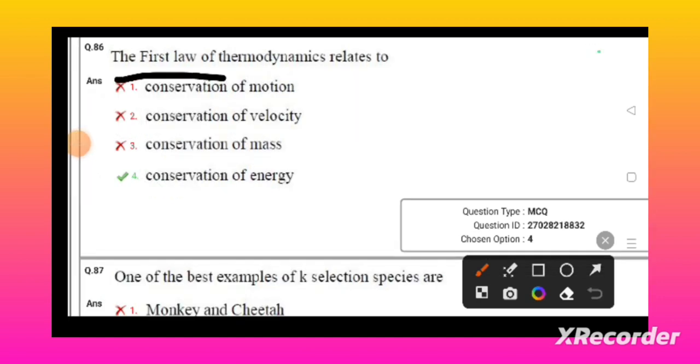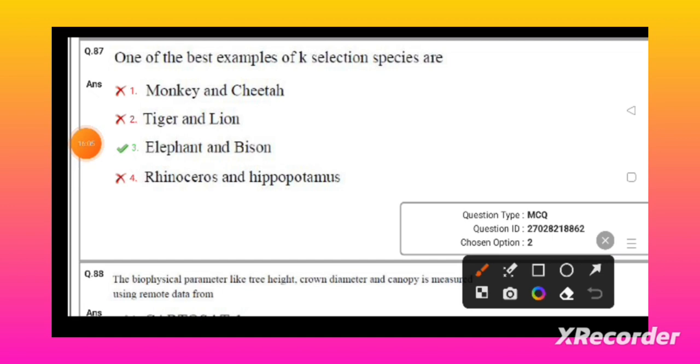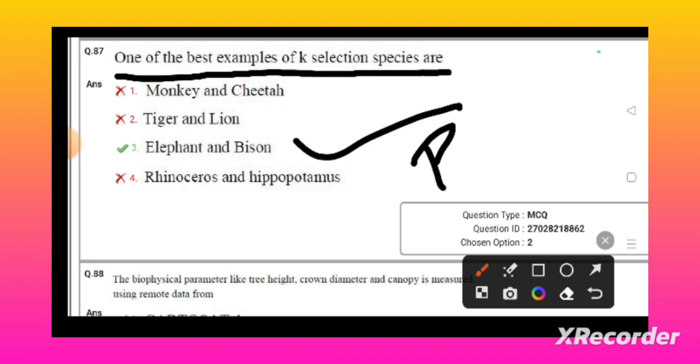One of the best examples of K-selected species: elephant and bison. The larger animals - the larger animals only are present in K-selection species, like elephant and bison. Here, parental care is also present. But in case of r-selected species, there is no parental care and they will produce a large number of seeds and offsprings.